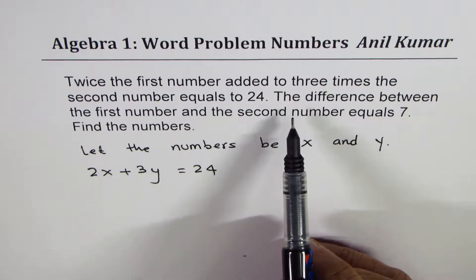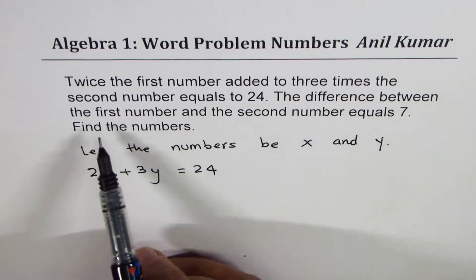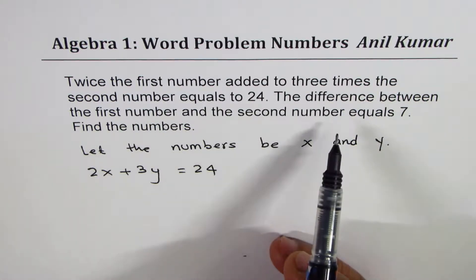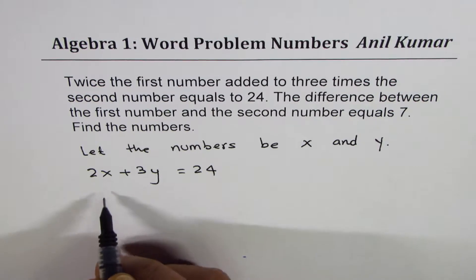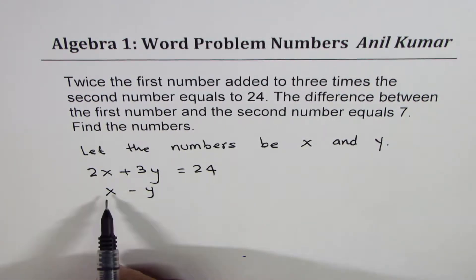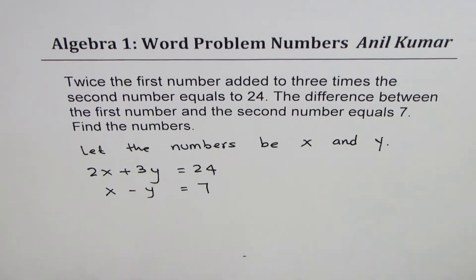The second statement is the difference between the first number and the second number. So whenever you say difference between the first and the second, we can say x minus y. Difference between the first number and the second number equals to seven.